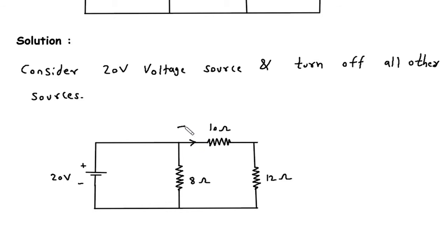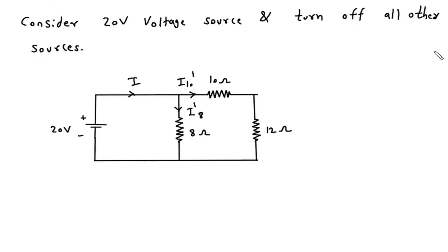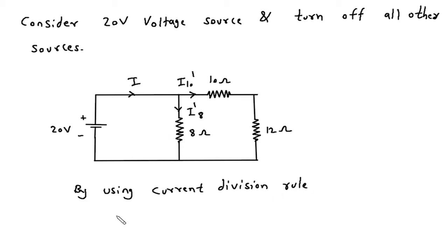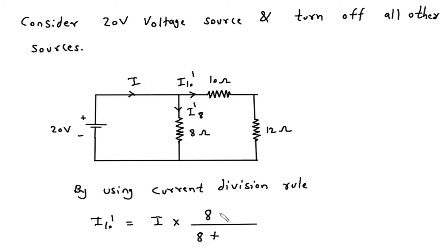Let's assume this is I10 prime and this is I8 prime, and the total current is I. Now, by using the current division rule, I10 prime is equal to the total current I multiplied by the parallel branch resistance. The 10 ohm and 12 ohm are in series, so the parallel resistance to this branch is 8 ohm. So I10 prime equals I into 8 divided by 8 plus 10 plus 12.